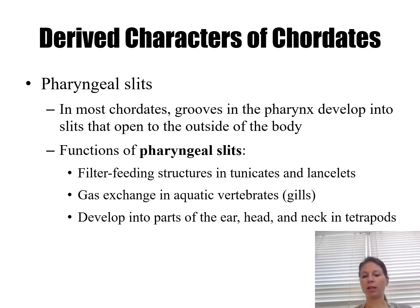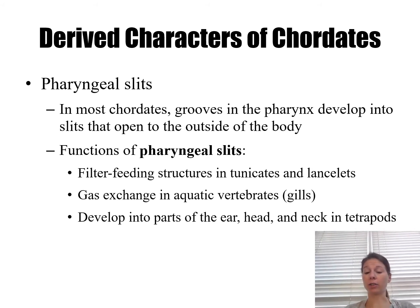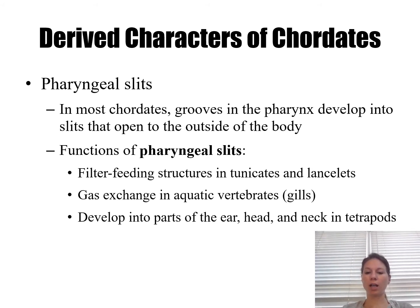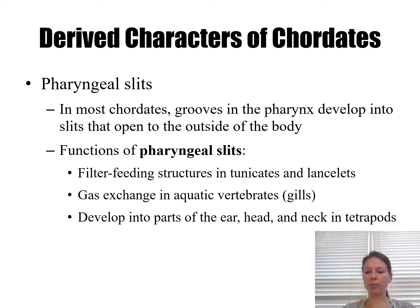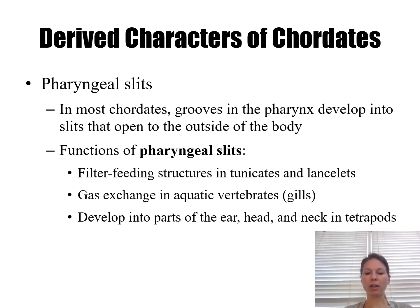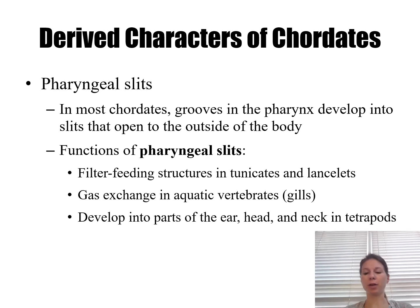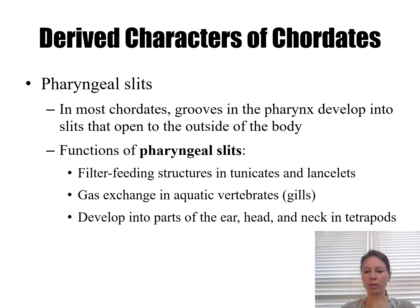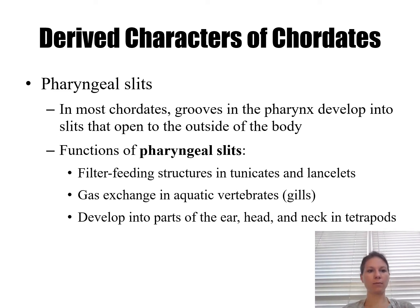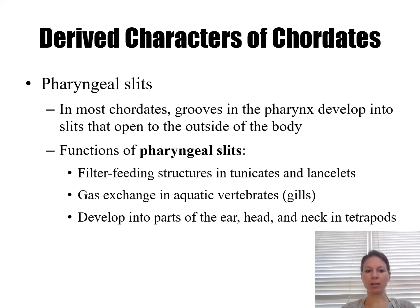Pharyngeal slits give rise to gills in fish, and they can become part of the middle ear and even the jaw bones in tetrapods — animals that have four limbs — which includes birds, amphibians, mammals, and reptiles.